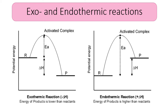Looking at the diagram on the left specifically, we can see that the products have less energy than the reactants. When we calculate the difference in enthalpy — products minus reactants — when products have less energy than reactants, delta H is going to be negative. That means energy is given out to the surroundings, because it's no longer inside the chemicals and has been released.